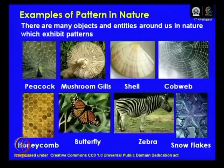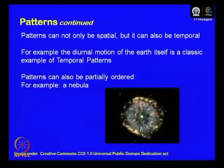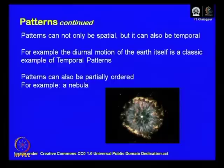In the context of this particular course, you may note that patterns can not only be spatial but also temporal. The examples shown so far are all spatial patterns where repetition is in space, but one can have repeating patterns in time. For example, the diurnal motion of the Earth itself is a classic example of a temporal pattern — every morning the sun rises and every evening it sets. It is also a regular pattern associated with the biological clock of our bodies.